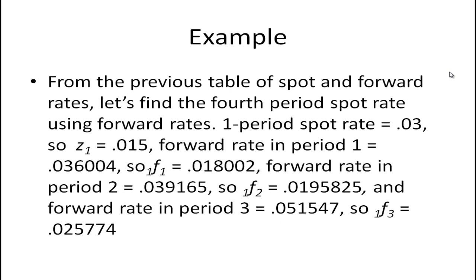So from that previous table let's just verify that there is this relationship between spot rates and forward rates. So let's find the fourth period spot rate using the forward rates. Well the first period we know the spot rate. It's .03. And so z1, the six month rate is .015.